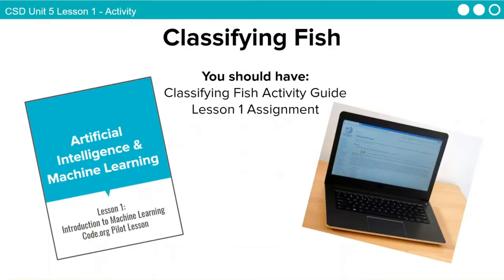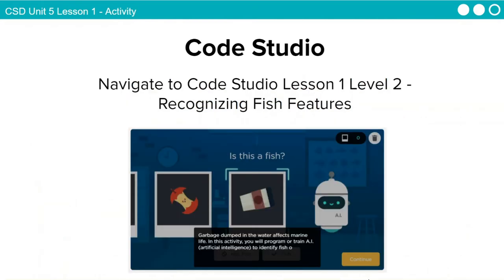We're going to do three activities for this lesson. You'll need your lesson activity guide and your laptop. Click on the link in your lesson to go to Code Studio, Lesson 1, Level 2. The name of this activity is "Recognizing Fish Features." In today's activity, we're going to use machine learning to help a robot clean up the ocean and learn how to identify fish.